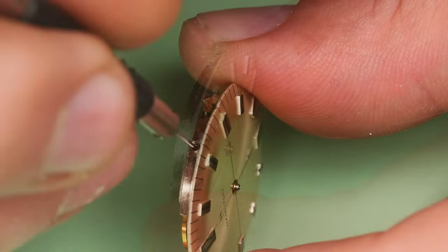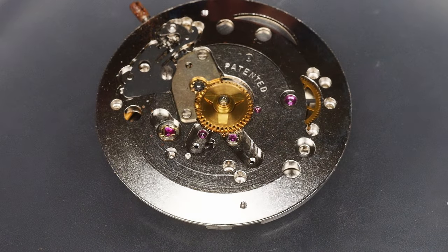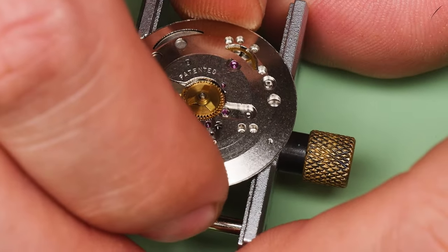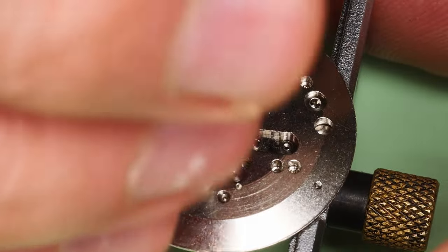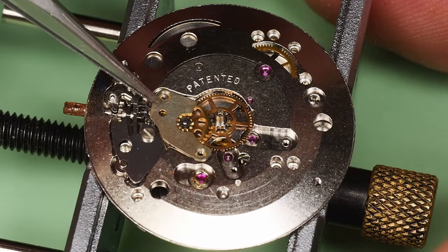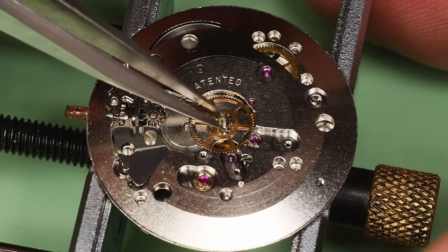Here I'm loosening the dial feet screws to remove the dial. Alright, let's get cranking on the dial side of this movement, starting with the hour wheel. The minute work cock is next, which exposes the minute wheel and the canyon pinion with driving wheel.